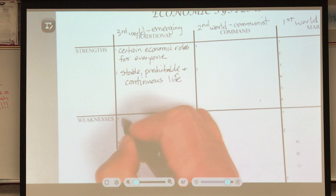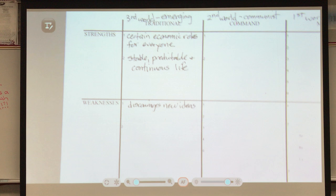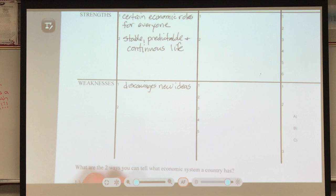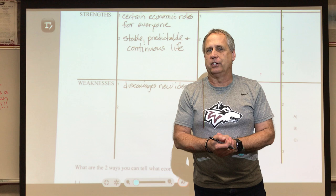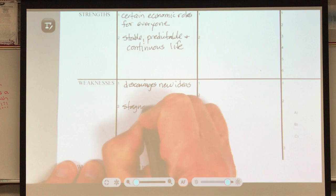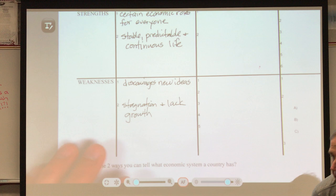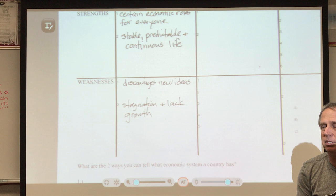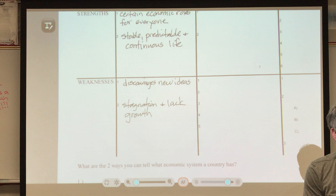What are the weaknesses of a traditional economy? Well, if things have been passed down, it usually discourages new ideas. They've done things a certain way for a long time, so it's very hard to come up with new ways of doing things. The other weakness is that it leads to stagnation and lack of growth — both for individuals and for the economy as a whole, because things are always done the same way.